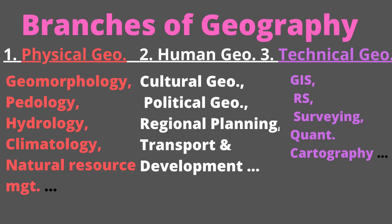Branches of geography. Broadly, the branches of geography can be grouped into three: physical geography, human geography, and technical geography. Physical geography, as the name implies, deals with the natural environment including plants and animals. Sub-fields include geomorphology, pedology, hydrology, climatology, natural resource management, etc.